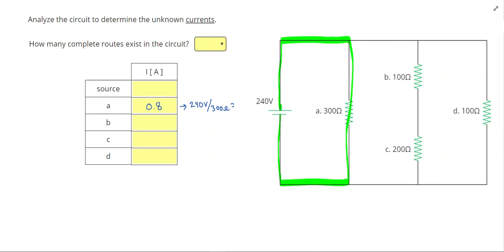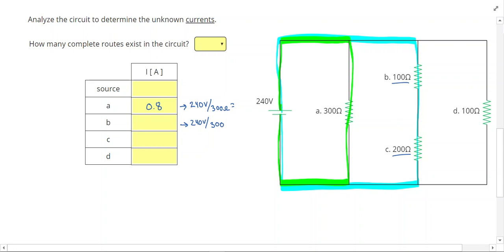Our next route, from positive to negative, goes through resistors B and C. I can do 240 volts divided by 300 Ohms again, but this 300 came from adding the 100 and 200 Ohms together.